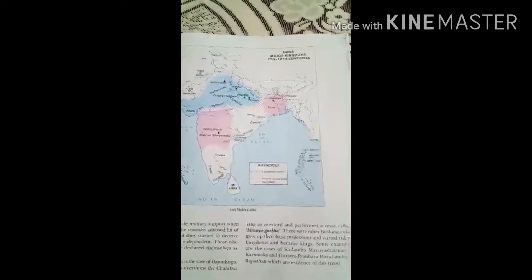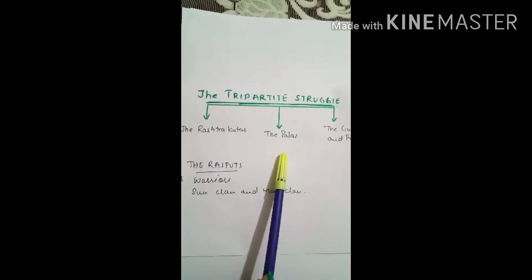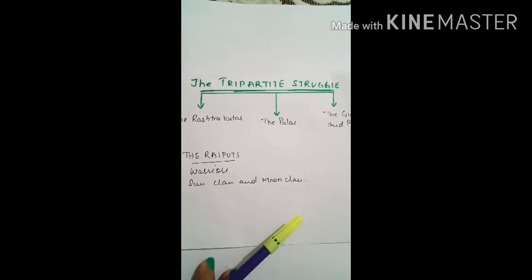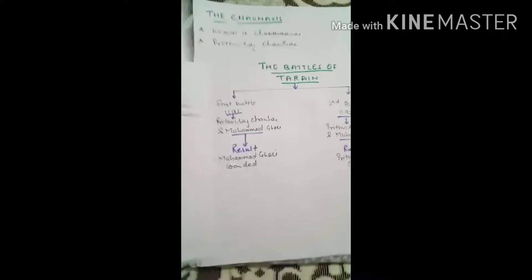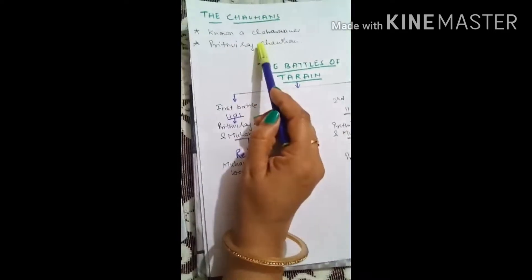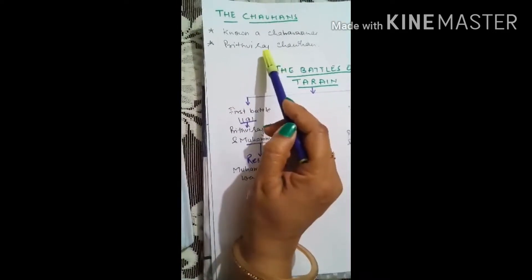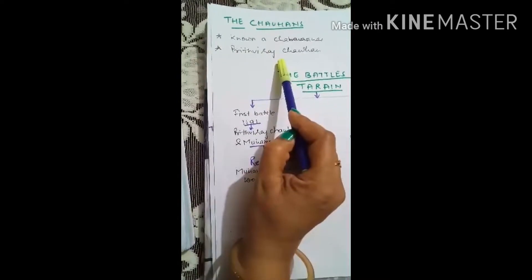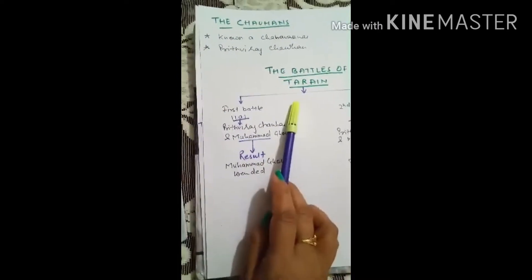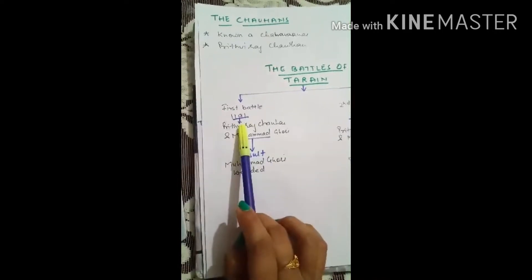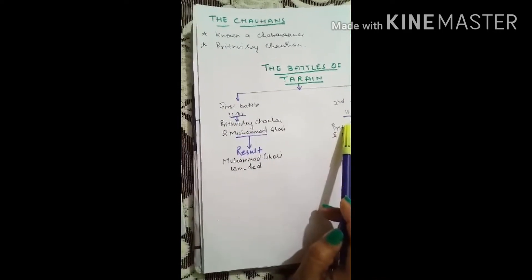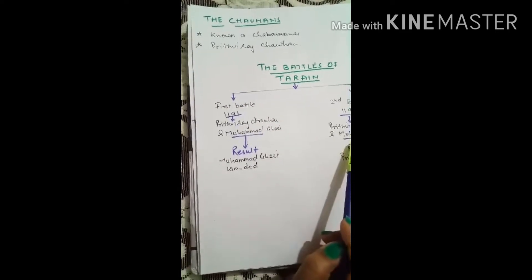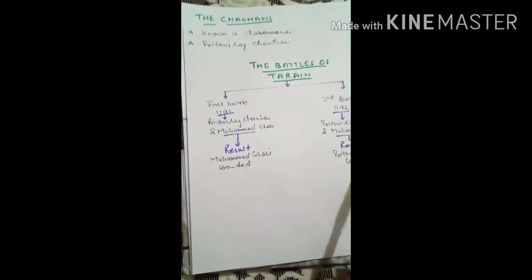They were having struggle for the control of Kannauj, which was a fertile area. Then emerged Rajputs, and with the Rajputs, emergence of Chauhan dynasty was there. A prominent ruler, Prithviraj Chauhan, he fought two battles of Tarain, 1191 and second battle in 1192 with Muhammad Ghori. In the second battle, Chauhan was captured.